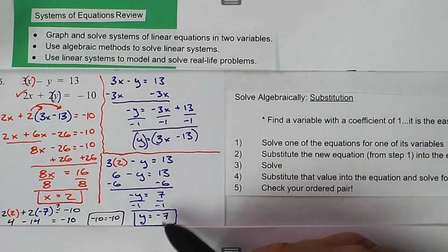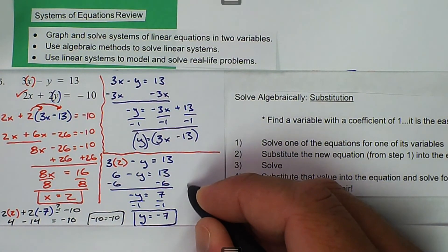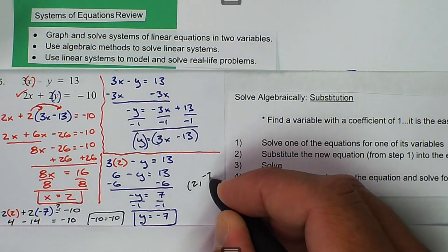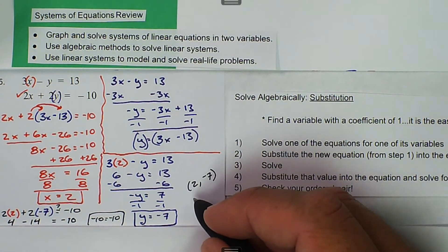For this one, the solution is 2, negative 7. And this is consistent independent.